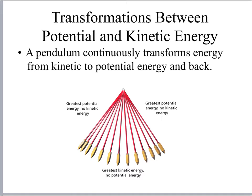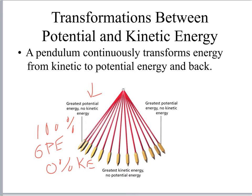One of the most basic examples of energy conversions is the transformation between kinetic and potential energy. A pendulum is an object that continuously transfers energy from kinetic to potential and back. As you see here, when the pendulum has its greatest potential energy — 100% GPE — at that same time it is at 0% kinetic energy, and vice versa.